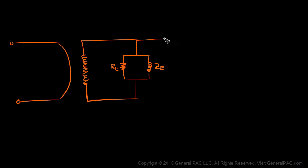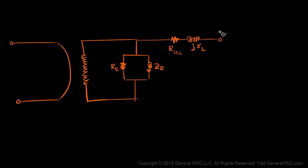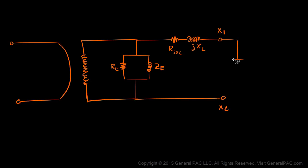We're going to have a resistor which we're going to call R-secondary, and then another reactance which we're going to call JXL. Consider this as our CT terminal or the X1 terminal. Similarly, we're going to have an X2 terminal on the secondary side, and then the terminals are connected to what we call a burden, labeled as B.